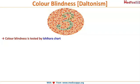Color blindness is quantified with the help of Ishihara's chart. This image is an example of the kind of plates present in the Ishihara chart. You ask the patient what he is looking at.